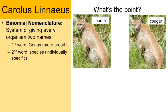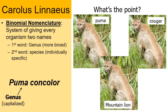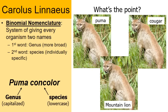Here's a picture of a puma, a cougar, and a mountain lion — and you're right, it is the same picture. In some parts of the world these cats are called pumas, in others cougars, and in others mountain lions, making you think they're three different species. In reality they are the same species: Puma concolor, with genus Puma and species name concolor. Binomial names remove this confusion.